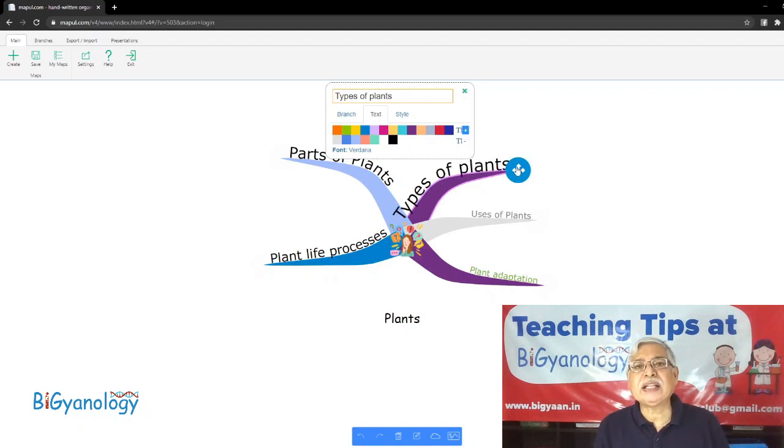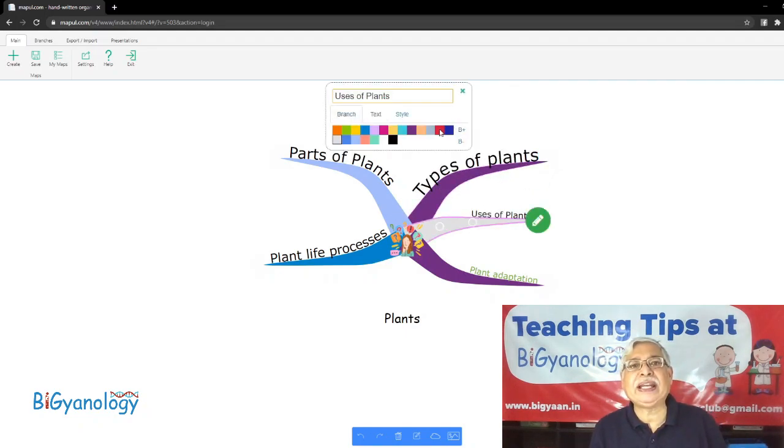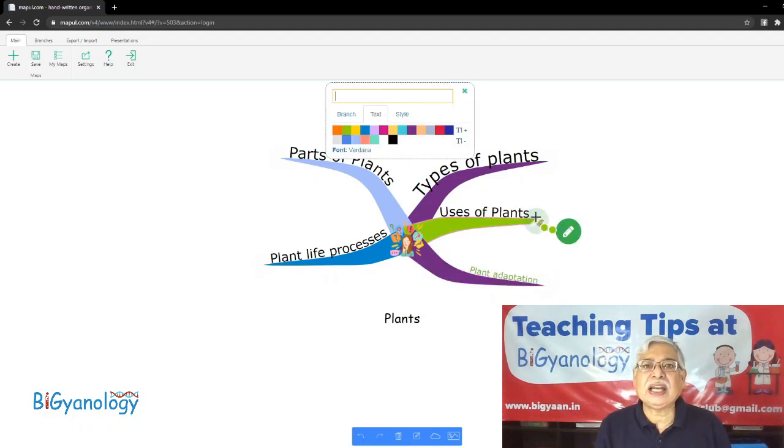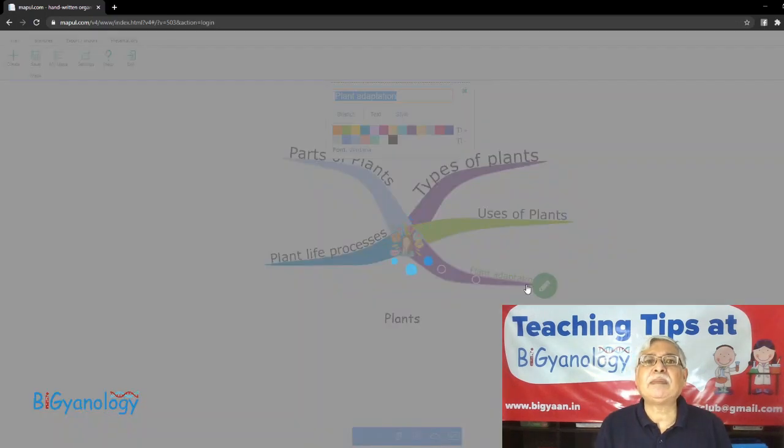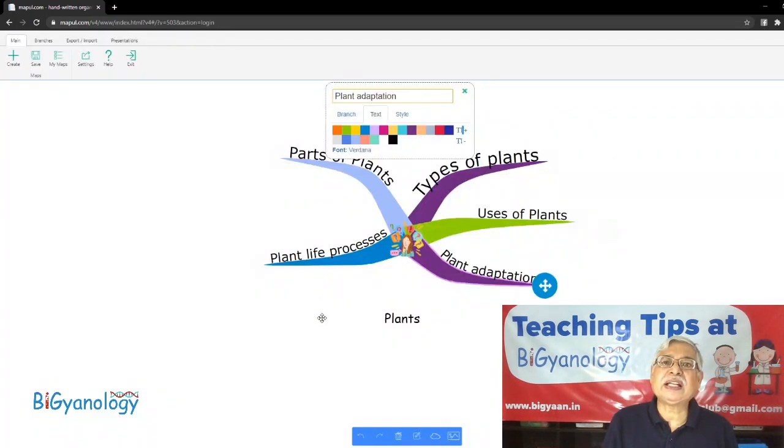To add more branches, you will need to click on the green icon and drag it. If you make a mistake, highlight the branch and click on the delete icon at the bottom bar.